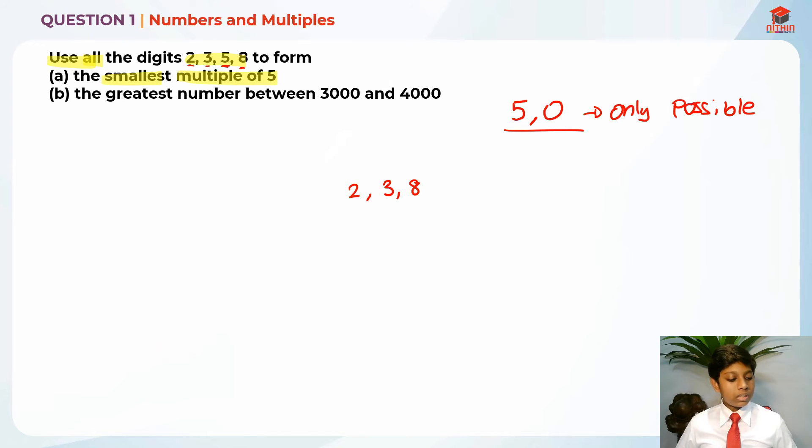So 2 is smallest, 3 is the next smallest and then 8 is the biggest. So basically, this is the correct orientation. So you just need to add the 5 at the end.